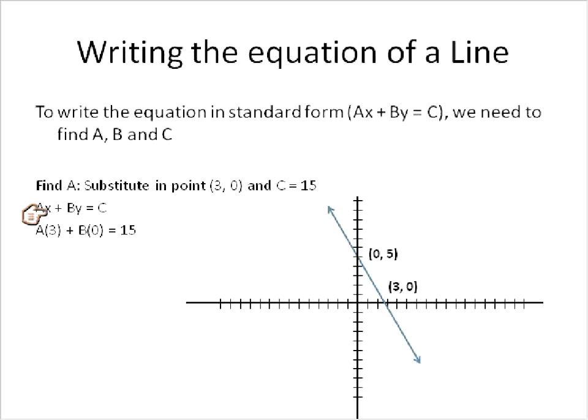So when we substitute in that value, A times x, x is equal to 3, plus B times y, y is equal to 0, and then we set that equal to the value of C, or 15. Then we'll be able to solve. B times 0 is 0. A times 3 is 3A. And to solve for A, we'll divide both sides by 3 and find that A is equal to 5.